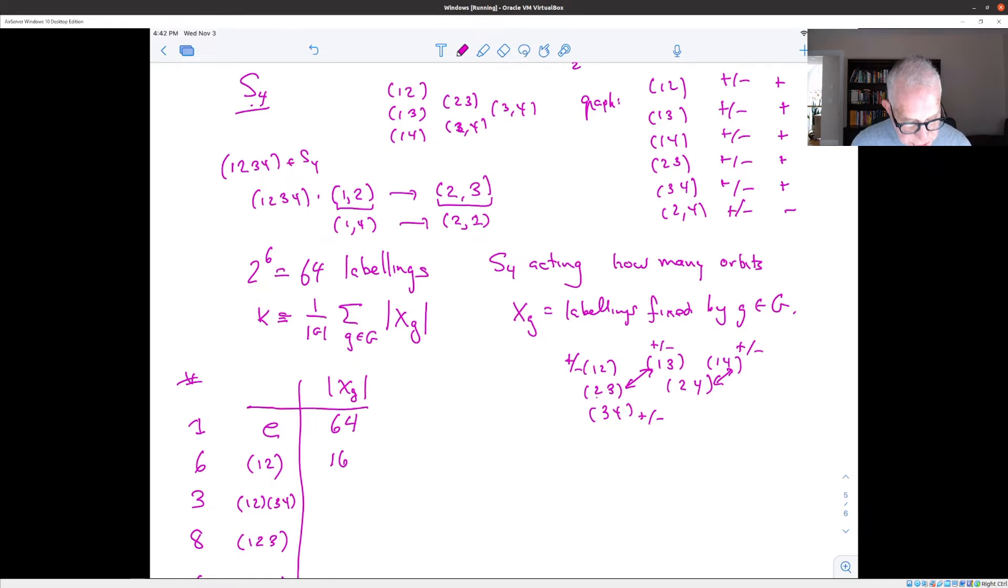So there's 2 times 2 times 2 times 2 or 2 to the 4th or 16 possibilities. And we're going to get the same answer for any transposition because any transposition is going to exchange two pairs of edges and leave two alone. If you looked at, for instance, 24, it's going to leave 24 alone and 13 alone and pair up the other two.